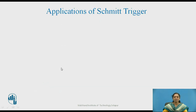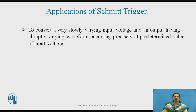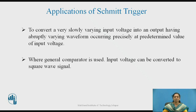Applications of Schmitt Trigger: it is used to convert a very slowly varying input voltage into an output having an abruptly varying waveform occurring precisely at predetermined values of input voltage. It is used in all applications where a comparator circuit is used and where the input voltage has to be converted to a square wave signal.